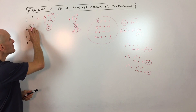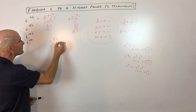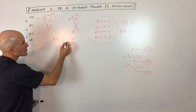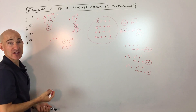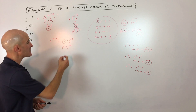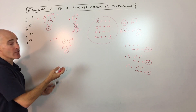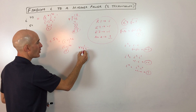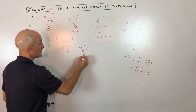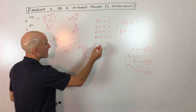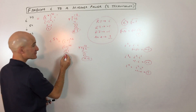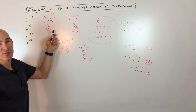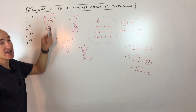Let's do a couple more examples. For i to the 52nd: how many times does 2 go into 52? 26 times with nothing left over. So i squared is negative 1, but negative 1 to an even power is positive 1. If you want to use the divide-by-4 technique, 4 goes into 52 thirteen times with zero remainder. Zero remainder means the answer is 1 — same answer. Some students prefer one technique, others prefer the other because you just have to remember i squared is negative 1.